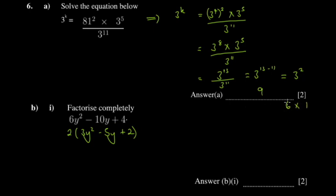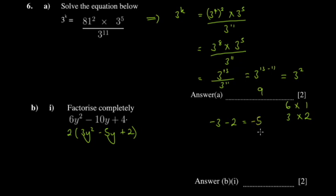We need two numbers that multiply to give 6 and add to give negative 5. Starting with 6 and 1, we can adjust: 3 and 2 multiply to give 6. To get negative 5, we use negative 3 and negative 2 — both negative, so they add to negative 5. These are the numbers to use. We now split the middle term: where it says minus 5y, we replace it with minus 3y minus 2y, giving us 2(3y² minus 3y minus 2y plus 2).